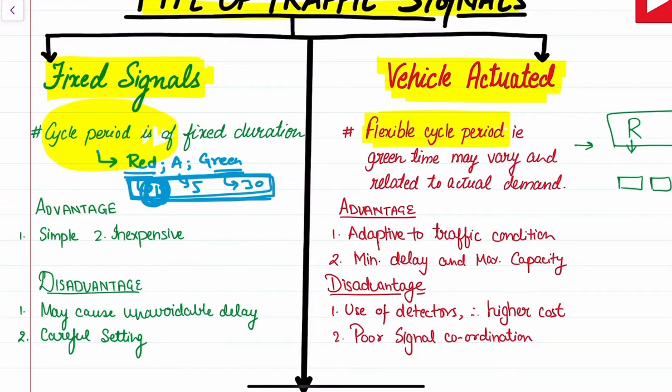In fixed signals, we have a fixed cycle period, while in vehicle-actuated type we have a flexible cycle period — the green time may vary related to the actual demand in the practical traffic scenario.